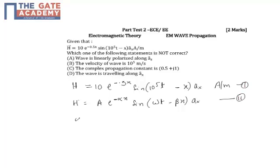what I will get? Alpha is equal to 0.5. Omega is equal to 10 to the power 5. And beta is nothing but 1.